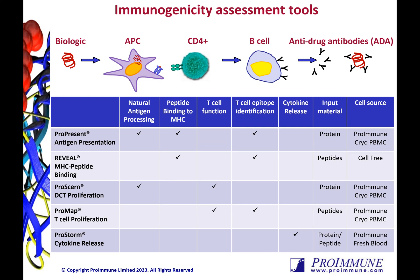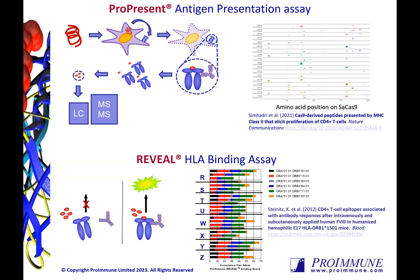The ProPresent assay is an exquisitely sensitive tool that utilizes mass spectrometry and proteomics to identify epitopes from a protein of interest. We load your protein onto monocyte-derived dendritic cells where it gets processed and presented on the surface. We then lyse the cells, immunoprecipitate the MHC peptide complexes, and sequence the eluted peptides using tandem mass spec.